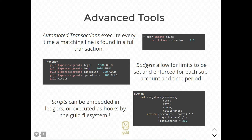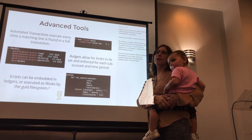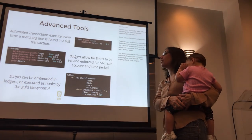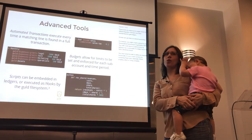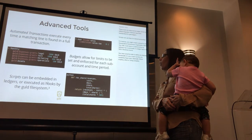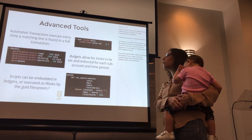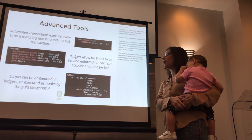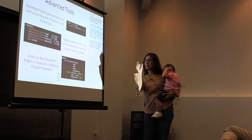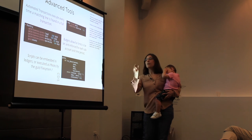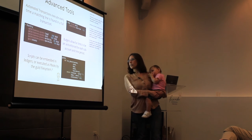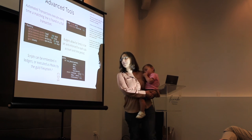We have a few more advanced tools. One is an automated transaction — for example, sales tax. If somebody buys something and does a manual transaction, you can automate it so that every time this product is sold a sales tax will be applied automatically. Another is budget enforcement within groups or individuals, limiting how much a person can spend. Also, Python scripts can be embedded into the ledger to create hooks, as you can see with a Python definition for revenue sharing.